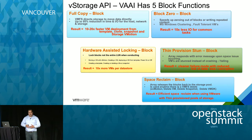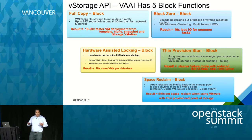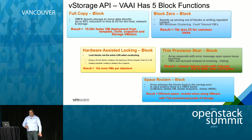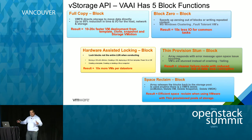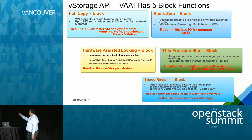Another example is thin provisioning stun. Thin provisioning lets you provision large storage that doesn't fully exist yet — optimizing across, say, 10 groups each requesting one terabyte when they likely won't use it all at once. But sometimes you run out of storage and VMs crash. With thin provisioning stun, the array responds to an error message and vSphere puts the VM in a freeze-like state, giving you time to provision or remove something from the array — resulting in fewer crashes.